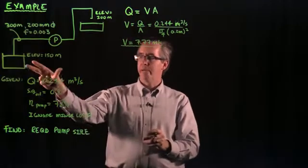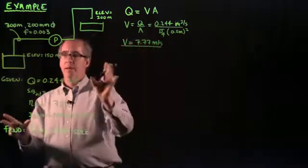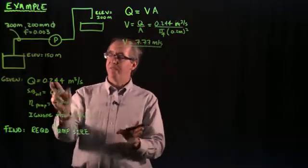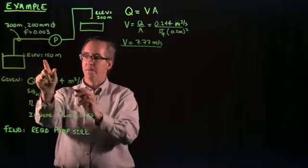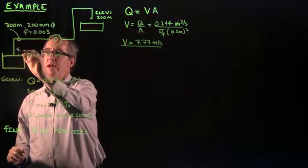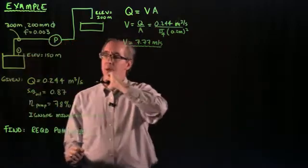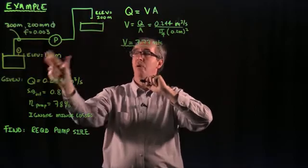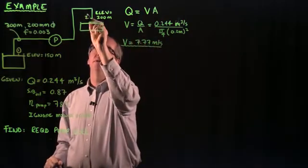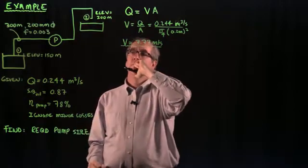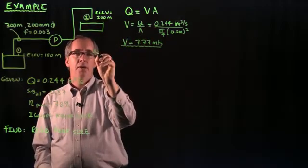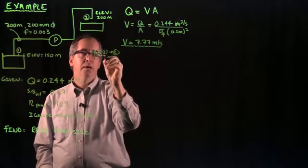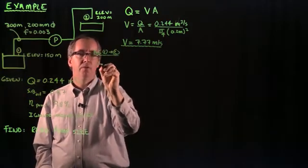So what we're going to do is we're going to write the energy equation from two different points. You can pick any two points you want but why not pick points that make the problem easier. For me those are points where I know things. For example I know the elevation here at the water surface so I'm going to use that as my first point. And I also know the elevation at the point where the oil discharges from the pipe which is 200 here. So I'm going to start by writing the Bernoulli equation between those two points. I'm going to write the generic version of it.